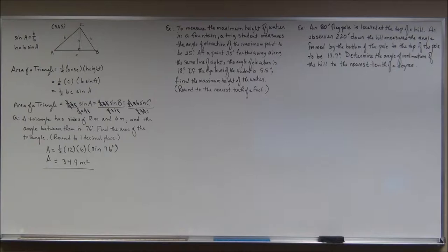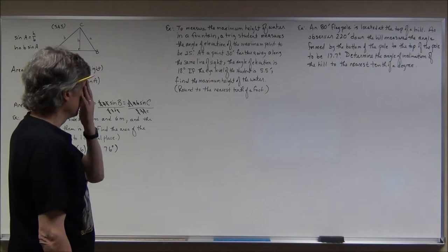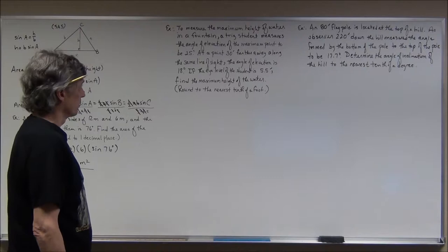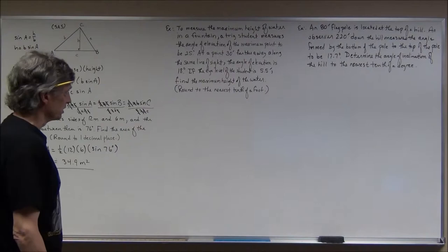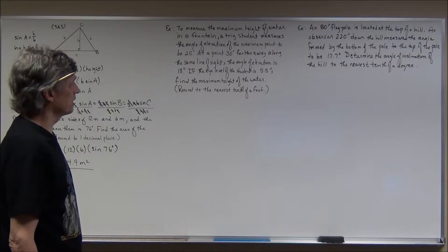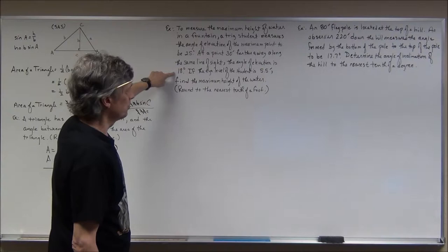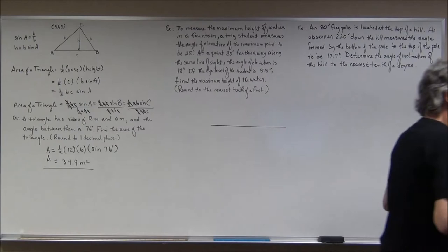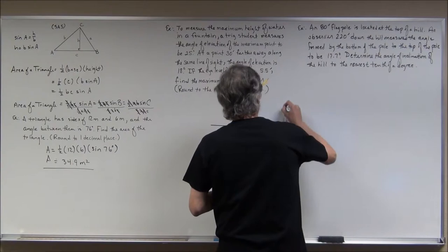Now the next two problems are examples of where we can use the law of sines to help us solve story problems. In both cases I'm going to draw a diagram to help get a good idea of what's going on. The first problem says: to measure the maximum height of a water fountain, a trig student measures the angle of elevation of the maximum point to be 25 degrees.